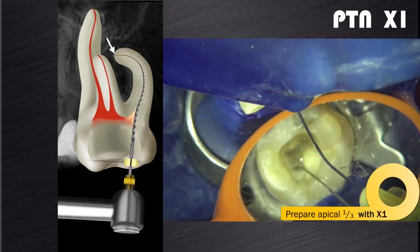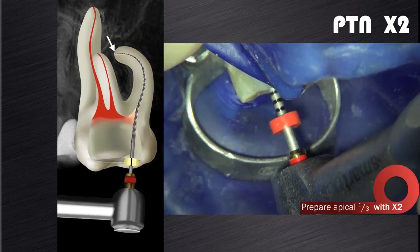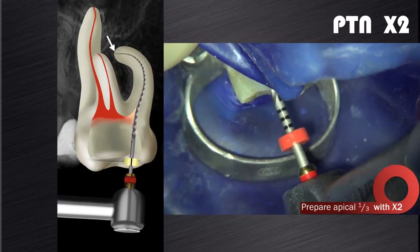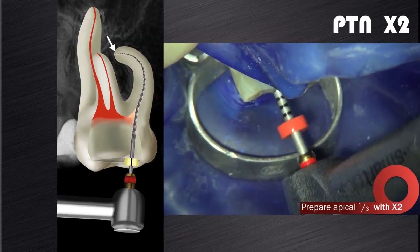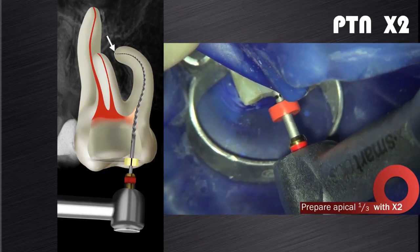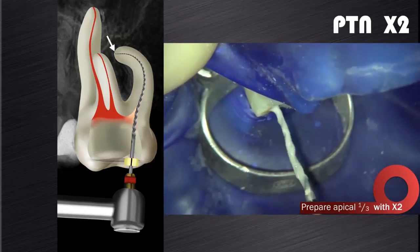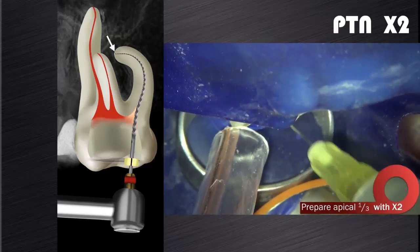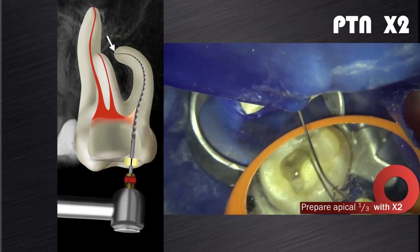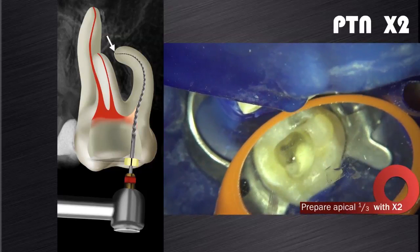This is again followed with an irrigation, recapitulation, and re-irrigation cycle. We can now introduce ProTaper Next X2 again in a conventional way to prepare the apical third of the canal. We irrigate again and verify the canal shape with a size 25 hand K-file as we discussed previously.